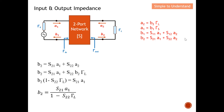I copy this set of equations here. What happens is that a2 can be described by b2 multiplied by the load ΓL, so I replace a2 with b2·ΓL. From here, b2 has a common factor, so I move that term over, giving (1 - S22·ΓL). This allows me to describe b2, which represents the reflected power wave from the two-port network.